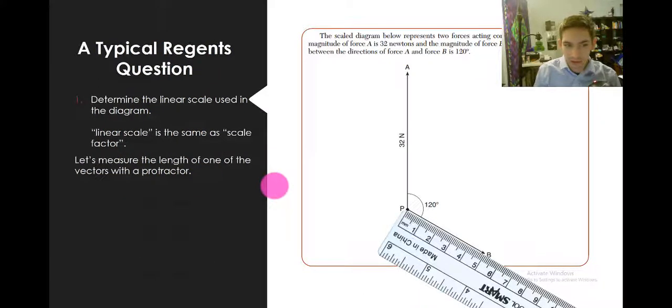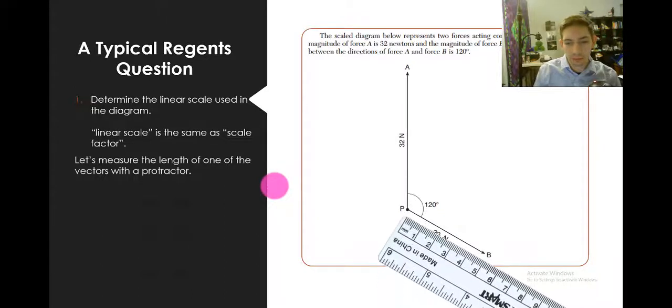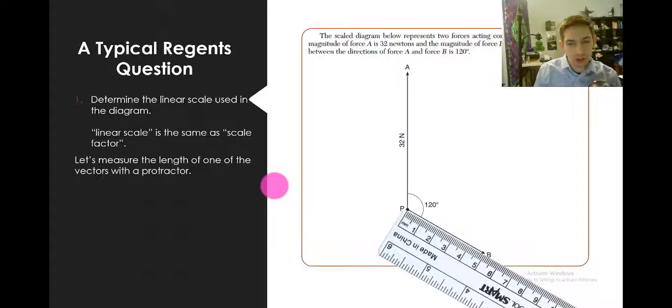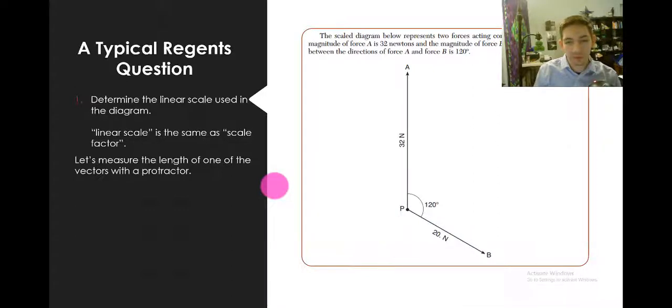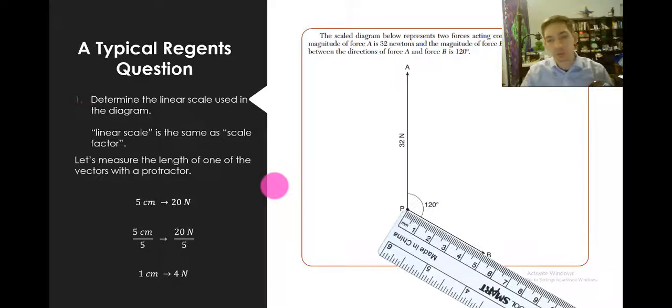So I'm going to back up and just do this again. We bring in our protractor or ruler. We measure in centimeters. Then we say how much that represents. So that represented 20 newtons. 5 centimeters represents 20 newtons. And then we divide both sides by that number 5, the number of centimeters we measured. And we write our scale factor as 1 centimeter represents this many newtons. In this problem it's newtons. In other problems it'll be kilometers or velocity or whatever.